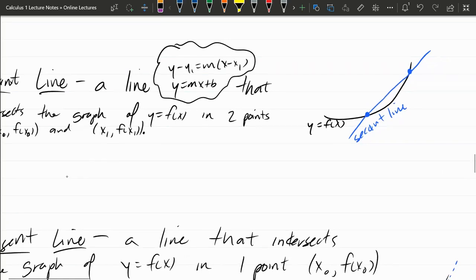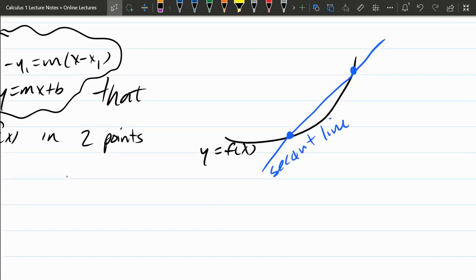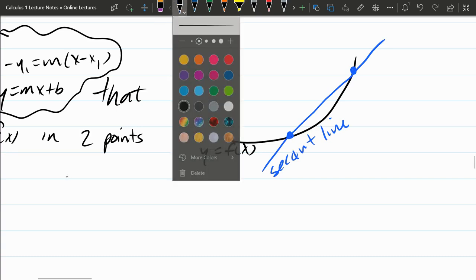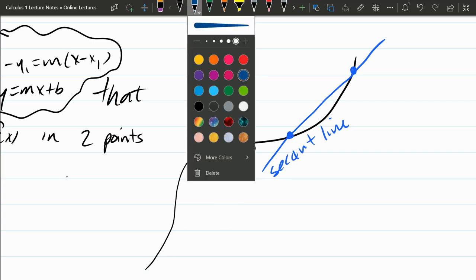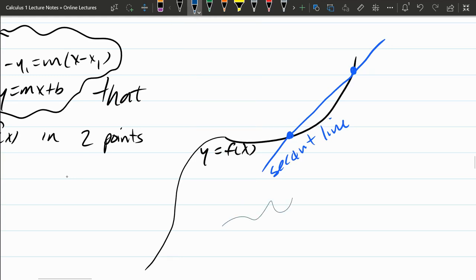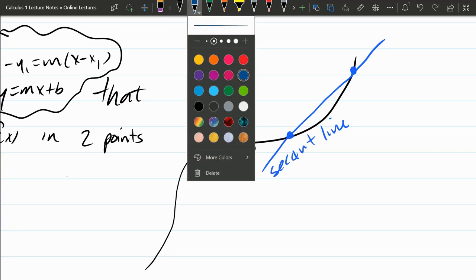Here's what it would look like. You have a function in black here. The secant line is in blue, and it touches the function in two points. Now it is possible that this function could curve back, could be curving back, and it's quite possible it intersects it.